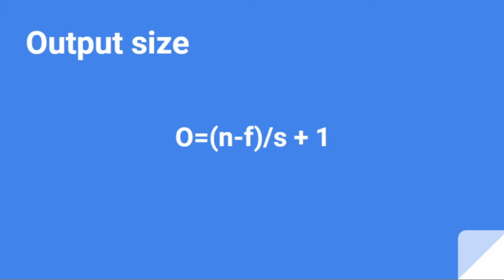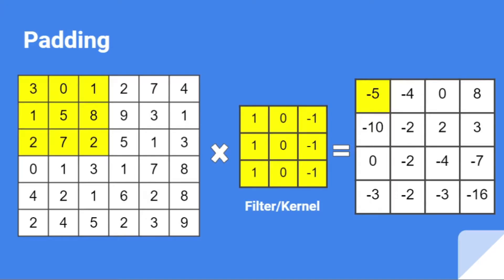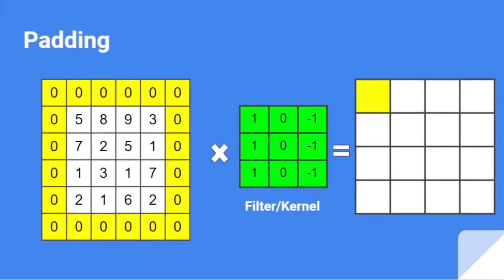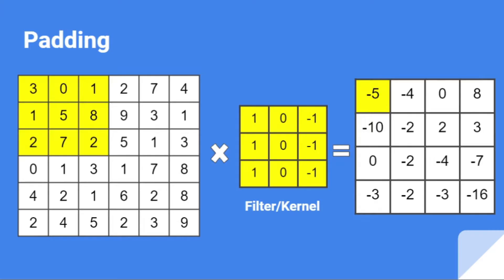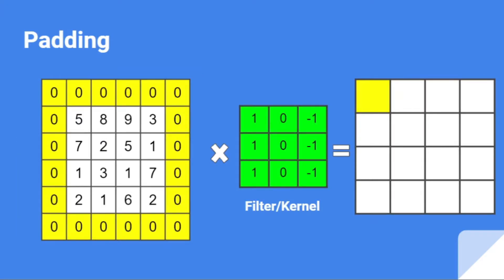Now let's go to the major topic: padding. Let's learn why we need padding before jumping into what it is. The observation is that the output size is less than the input size, because of the N minus F in the equation. So the tensor size keeps on decreasing, which means we are losing a lot of data. In machine learning problems regarding images where we don't want to lose information, this is a problem. So the way around it is padding.